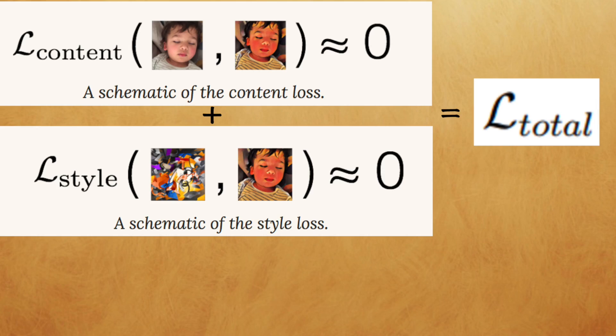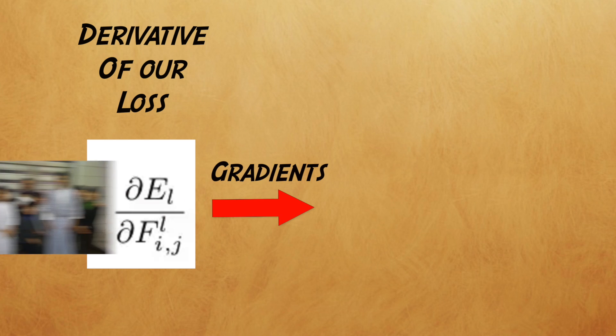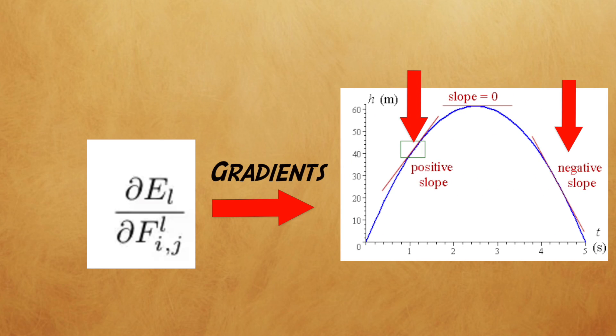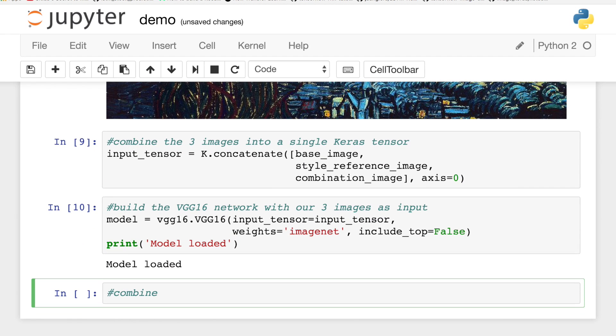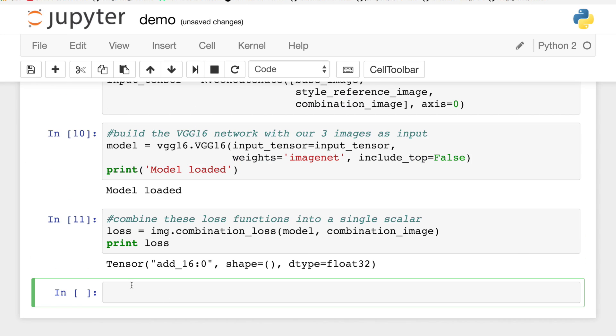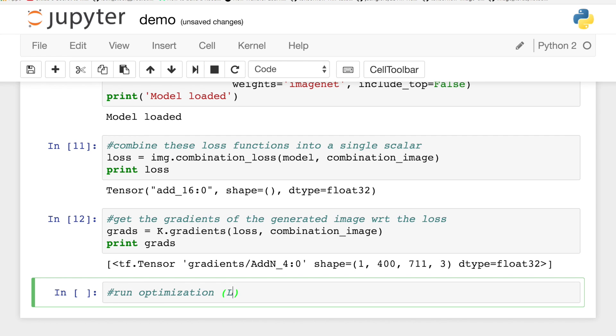Now that we have our losses, we need to define gradients of the output image with respect to the loss, and then use those gradients to iteratively improve our output image to minimize the loss. So we'll calculate the derivative of our loss with respect to the activations in a given layer to get our gradients, and use them to update our output image, not our weights like we usually would. The gradients give us a direction on how to update our output image such that the difference between the base image and the style image becomes smaller. We can call our helper class's combination loss function, giving it the model and the output image as parameters. So we'll combine the loss functions into one, then get the gradient of the output image with regard to the loss using the gradients function of Keras, which translates to tf.gradients under the hood. This gives the symbolic gradient of one tensor with respect to one or more other tensors.